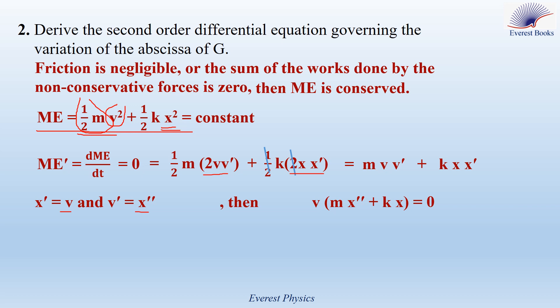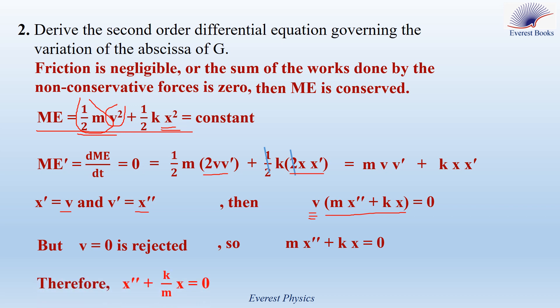This equation has two solutions. The first solution is V equal to zero, but this solution is rejected because in reality V is equal to zero only at the extreme positions. The second solution gives M X double prime plus K X equals zero. Dividing by M, this becomes X double prime plus (K over M) X equals zero. This is the differential equation.